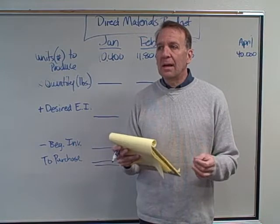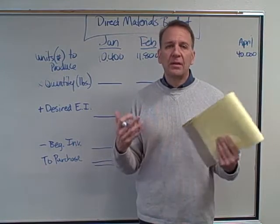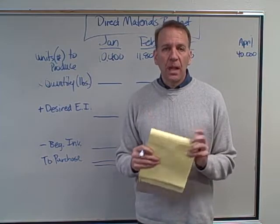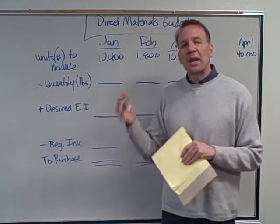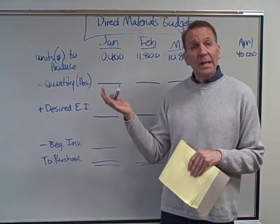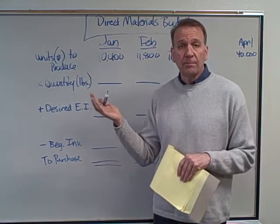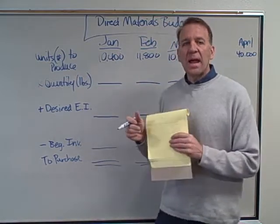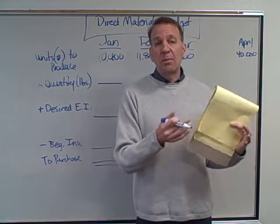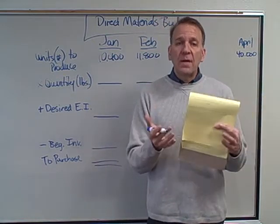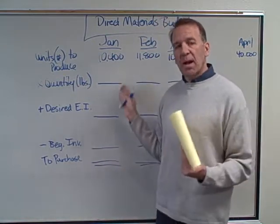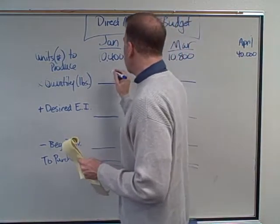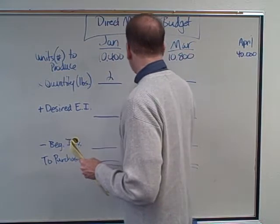It might be yards of material for manufacturing clothes, or yards of lumber if we're manufacturing something that requires lumber. In our case we're manufacturing salsa, so we'll have a budget for tomatoes and possibly for onions or whatever other ingredients go into the salsa. Each ingredient requires its own budget.